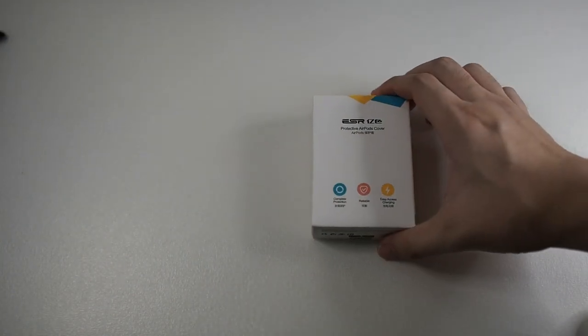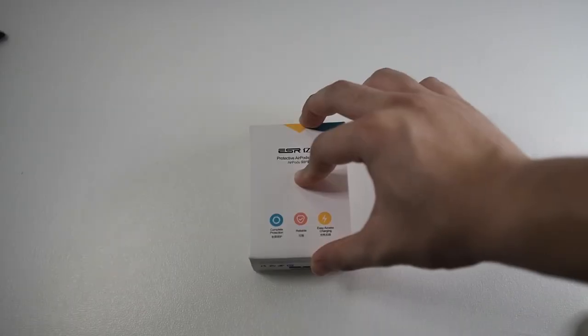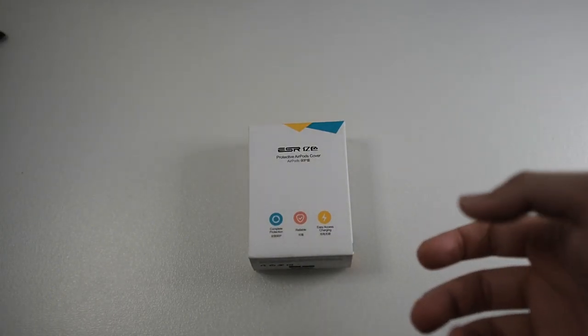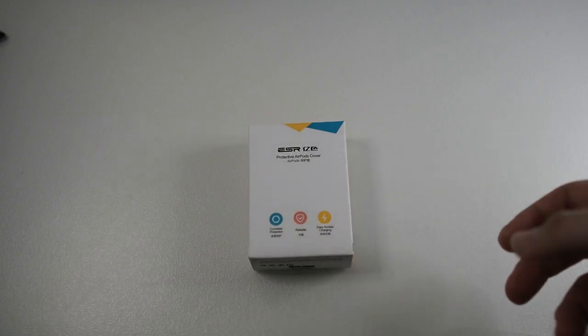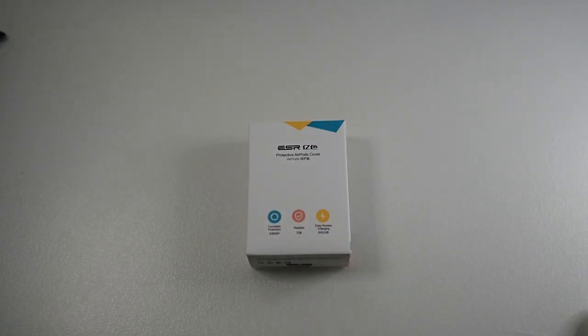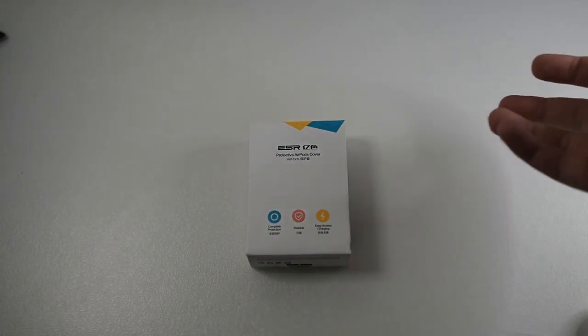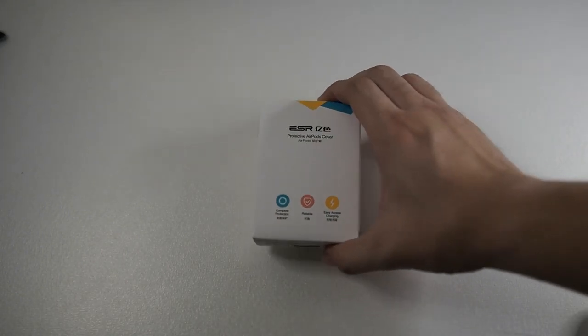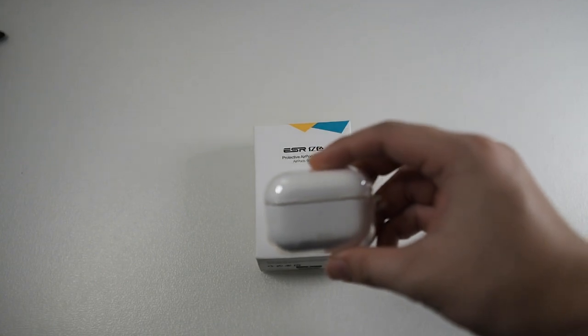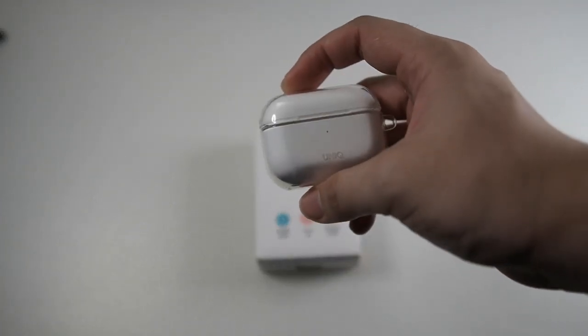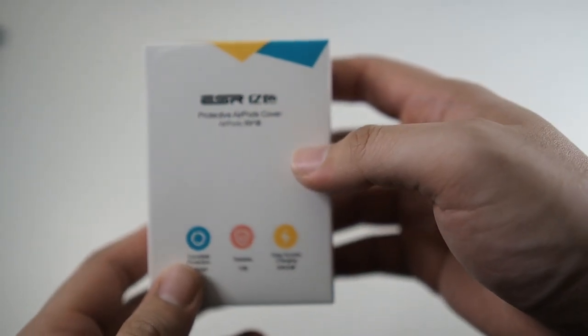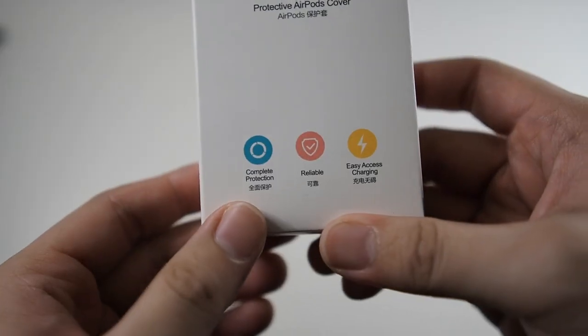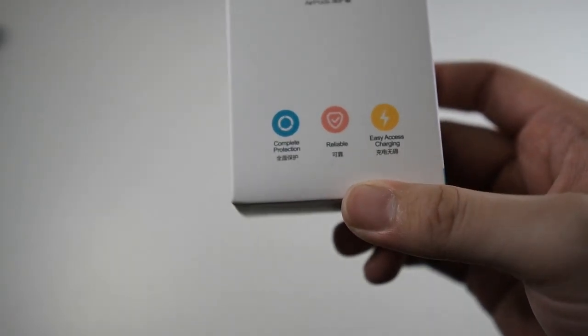Let's get into the unboxing of the ESR sort of fake leather case. I don't want to spend too much on cases like Nomad because they provide basically the same amount of drop protection - those cases are just more premium because they're real leather. But this is usually in my pocket most of the time, so I don't really need a very flashy case. So I decided to get one of these. This Unique one is pretty cheap - below 80 ringgit if I'm not mistaken. So you can see ESR protective AirPods Pro cover - the features are complete protection, reliable, and easy access for charging.